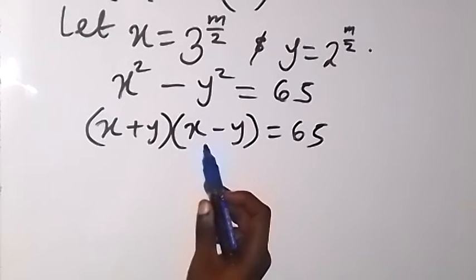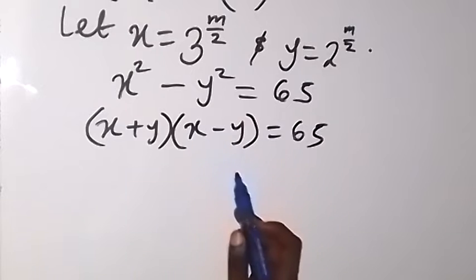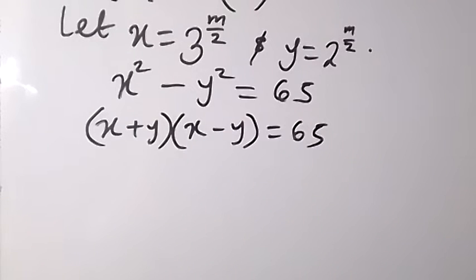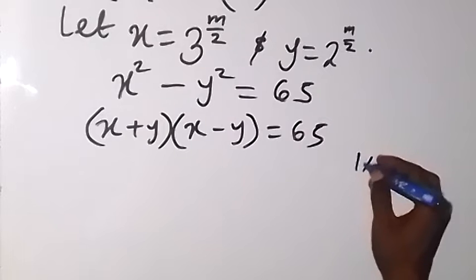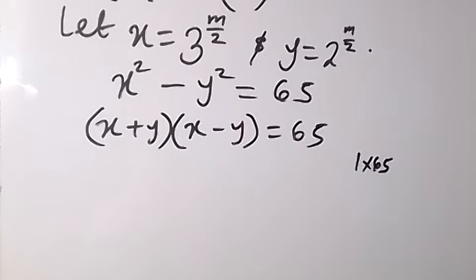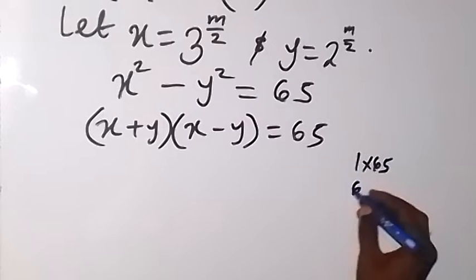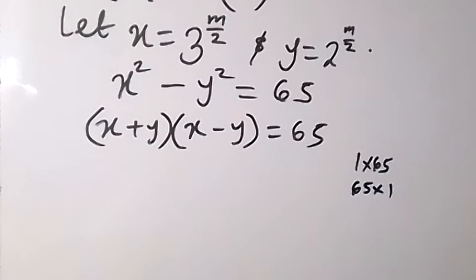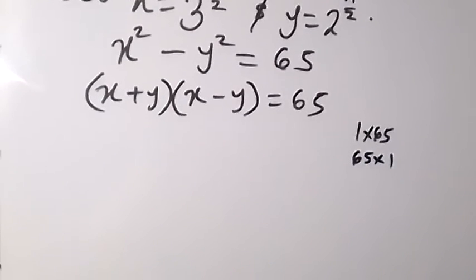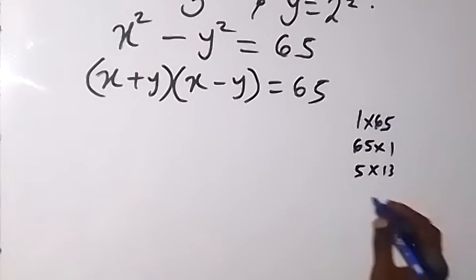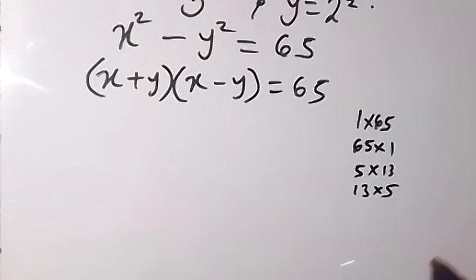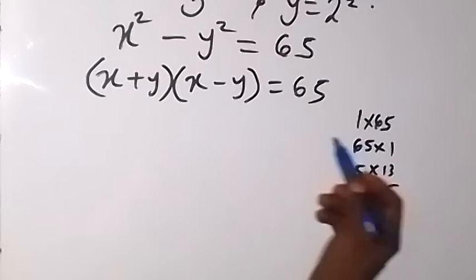Now let us look at that. We need to break 65 down into factor pairs. The ways we can factor 65 are: 1 times 65, which gives us 65; also 65 times 1; and also 5 times 13; and also 13 times 5. Watch to the end and you will see that this is interesting.